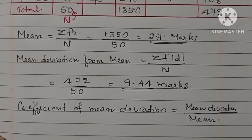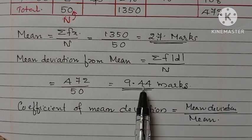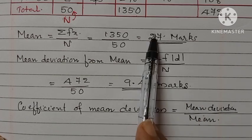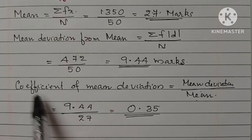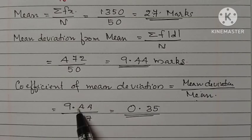After that, we have to find the coefficient of mean deviation. It is equal to mean deviation by mean. That means 9.44 divided by mean. Mean is 27. The answer is 0.35.